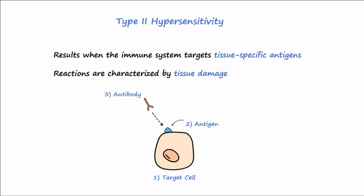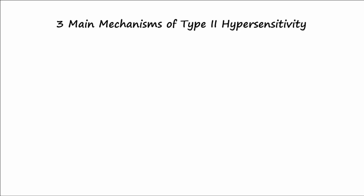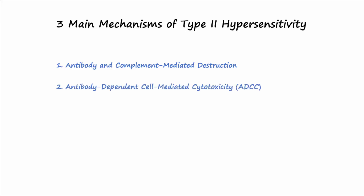Antibody-antigen binding activates certain mechanisms that ultimately damage the target cell. There are three main mechanisms involved in a type 2 reaction: the first is antibody and complement-mediated destruction; second, antibody-dependent cell-mediated cytotoxicity, or ADCC; and third, target cell dysfunction.